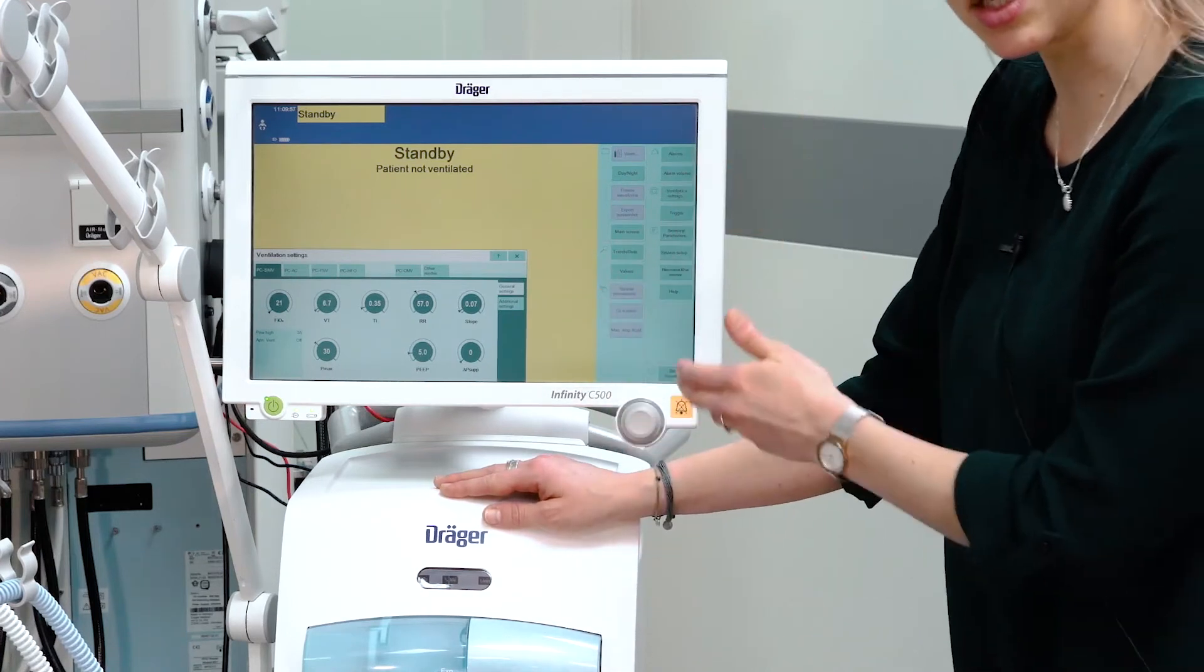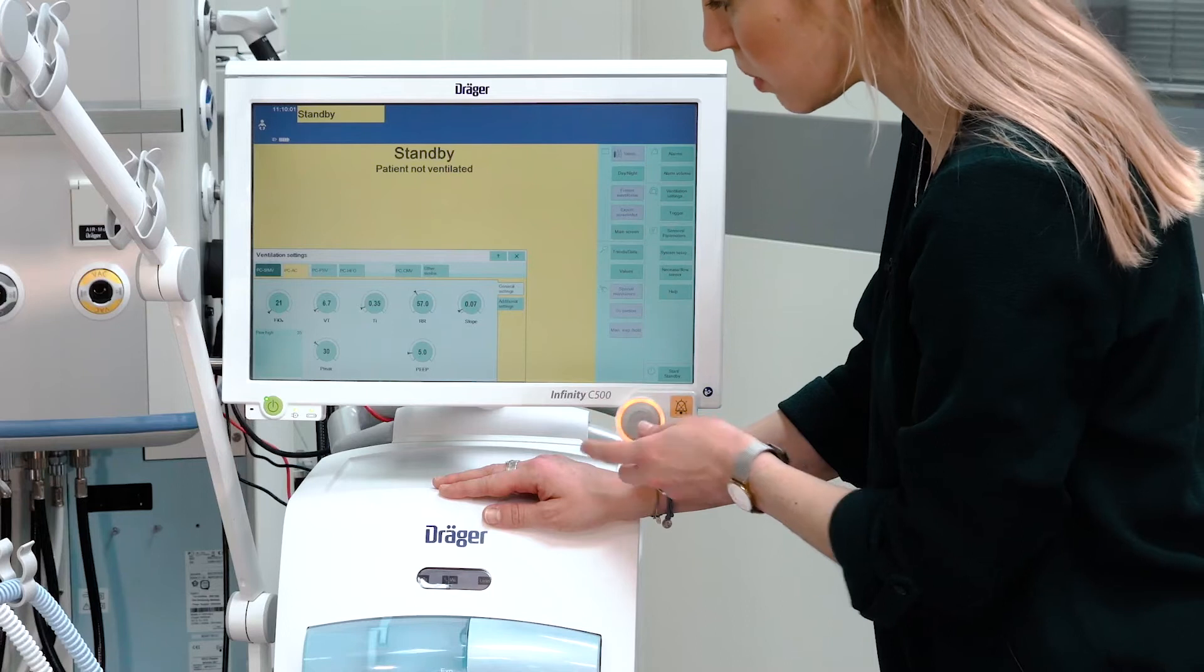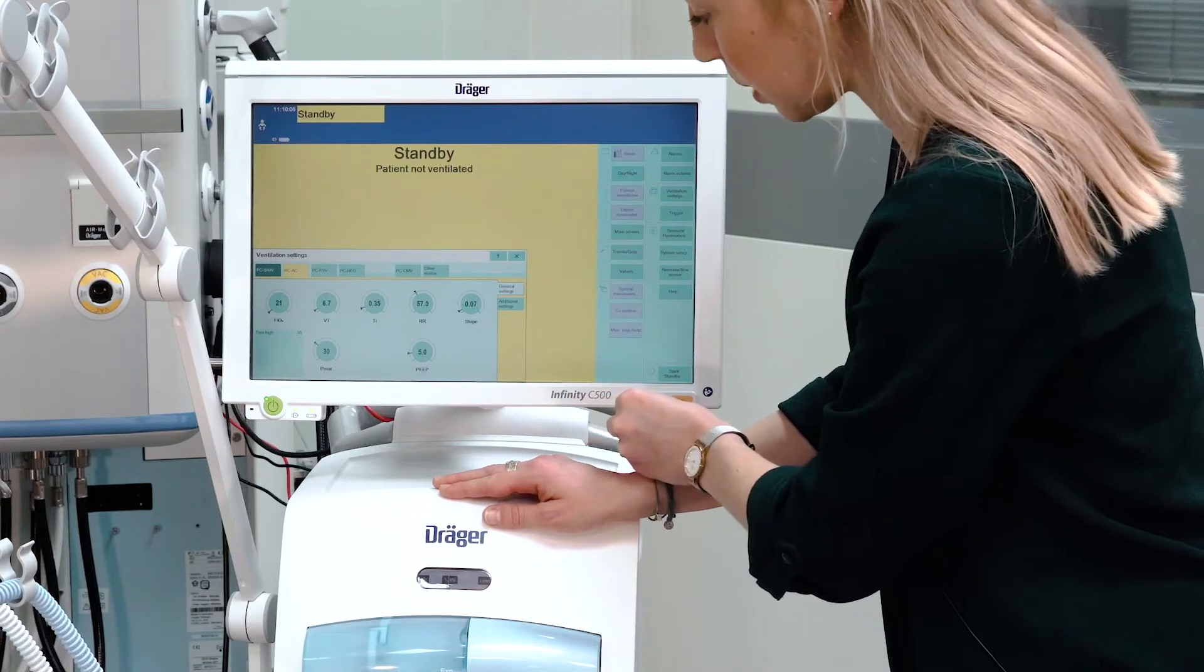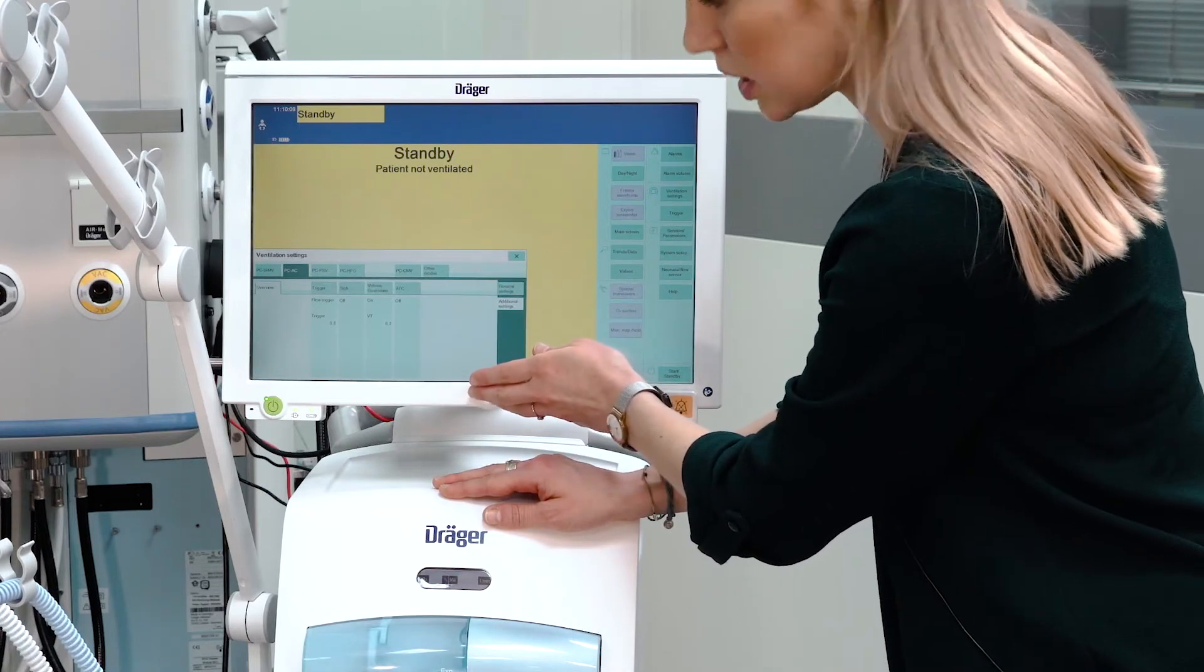If you want to start in a different ventilation mode, please select the respective ventilation mode, make sure that the settings are all correct, and confirm by pressing the rotary knob. You can choose additional settings over here.